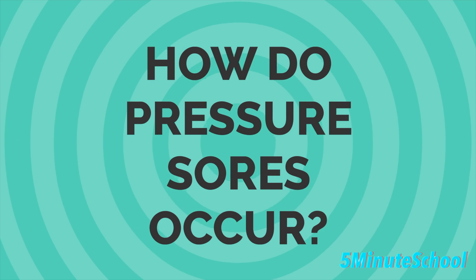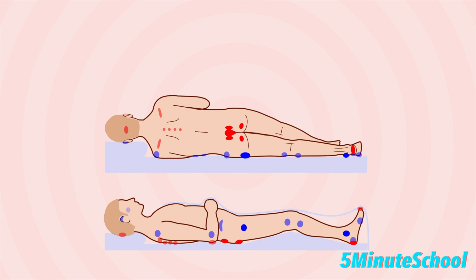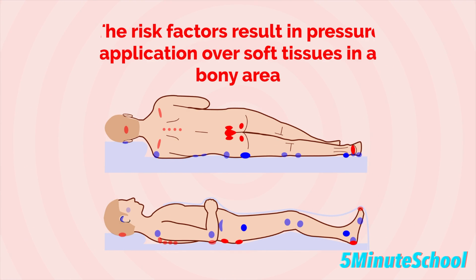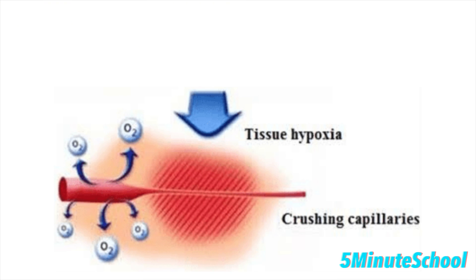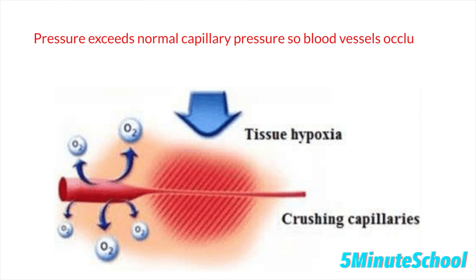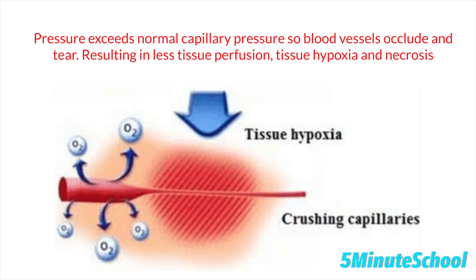So how do pressure sores occur? Whatever the risk factor is, it results in pressure application over soft tissues in a bony area. This pressure exceeds the normal capillary pressure, causing occlusion and tearing of small blood vessels and reduced tissue perfusion. Eventually this leads to ischemic necrosis where cells and tissues start to die, resulting in the formation of a pressure sore or pressure ulcer.